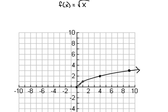For instance, if I took an x-value of 0, the square root of that would be 0. If I took an x-value of 1, the square root of that would be 1. An x-value of 4, the square root would be 2. And an x-value of 9, the square root would be 3. So this is my original base function that I'm going to work from.